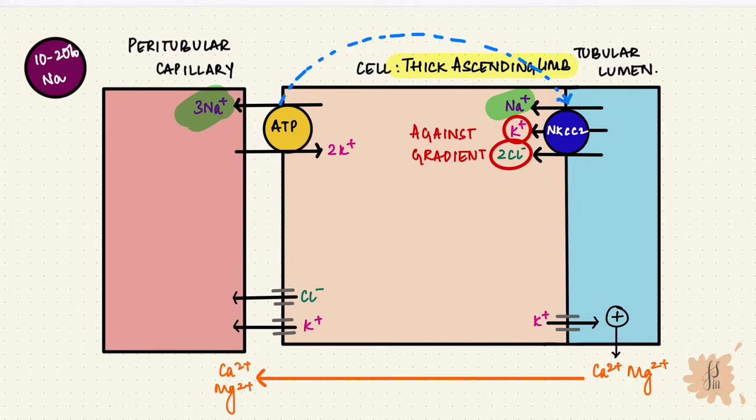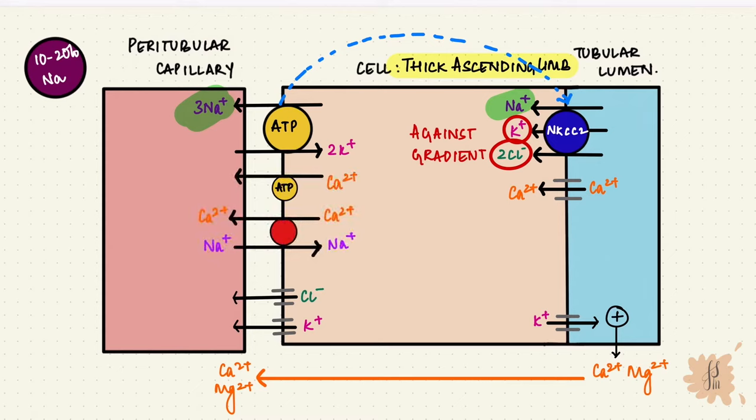50 percent of calcium also gets transported transcellularly, which means through the cell, by a concentration gradient. Once it gets into the cell, it enters the interstitium by the calcium ATPase and also in exchange for sodium. This transcellular route is stimulated by parathormone, so it increases calcium reabsorption.